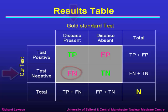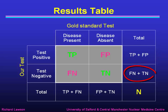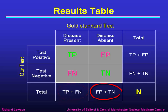We can add up the rows to give true positives plus false negatives as the total test positives, and false negatives plus true negatives as the total test negatives. Adding up columns gives true positives plus false negatives as the total with disease present, and false positives plus true negatives as the total with disease absent. The overall total n is the sum of all of those. We'll see lots of these tables in exactly the same format.